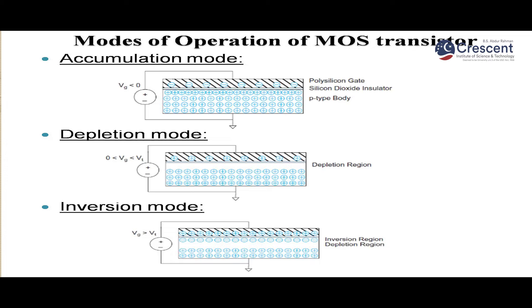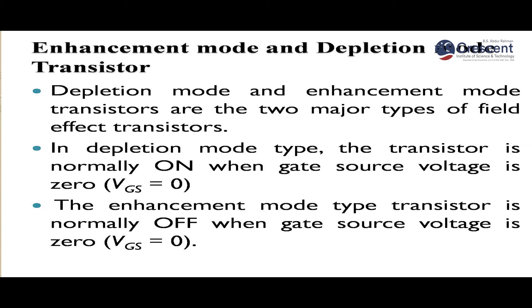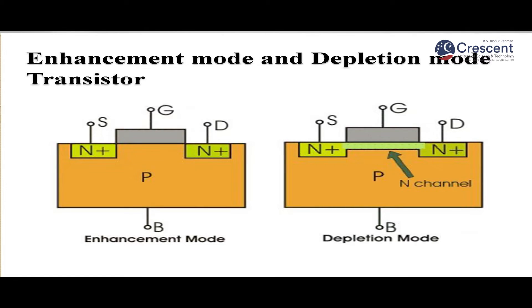Apart from NMOS and PMOS classification, MOSFETs are also classified as enhancement mode and depletion mode. In depletion mode, the transistor conducts even when gate voltage is zero, because a built-in channel already exists. In enhancement mode, the channel is formed only in response to the gate voltage, after which drain-to-source voltage drives the conductivity.